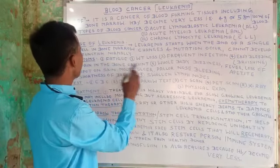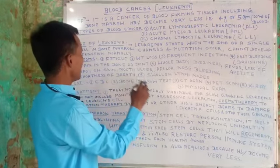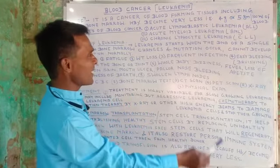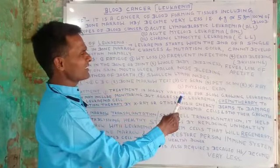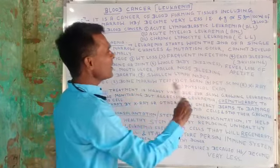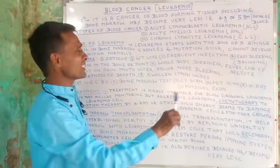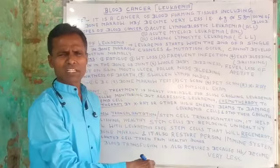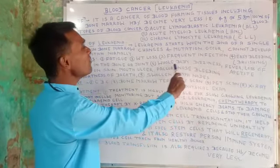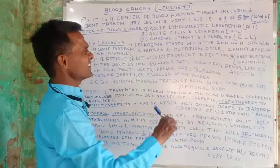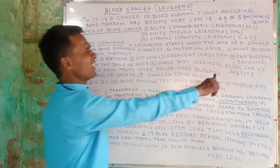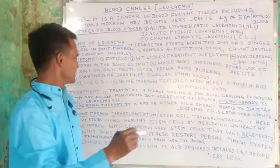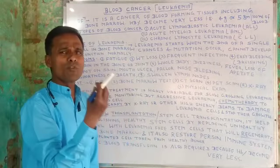What are the symptoms of blood cancer? Symptoms include fatigue, significant weight loss, nose bleeding or bruising, pain in the bones or joints, dizziness, fever, loss of appetite, and spots on the skin.